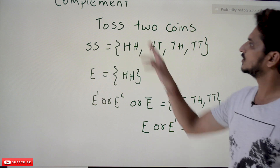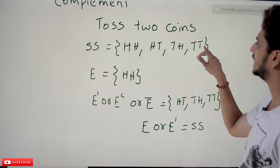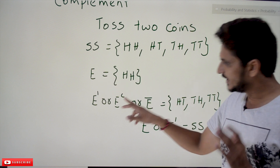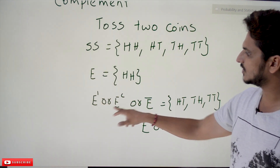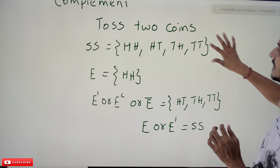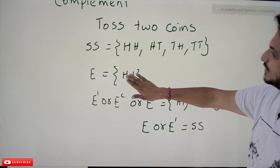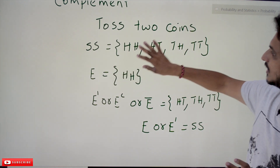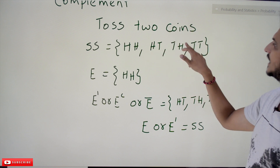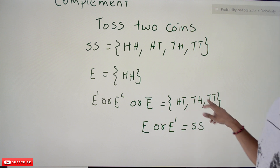Now coming to complement events. Toss two coins: the sample space consists of {HH, HT, TH, TT}. Let event E = {HH}. The complement of E, written as E' or E-complement or E-bar, consists of the elements that do not belong to E but belong to the remaining sample space. So removing HH from the sample space, the remaining elements are HT, TH, and TT. Therefore E-complement = {HT, TH, TT}.